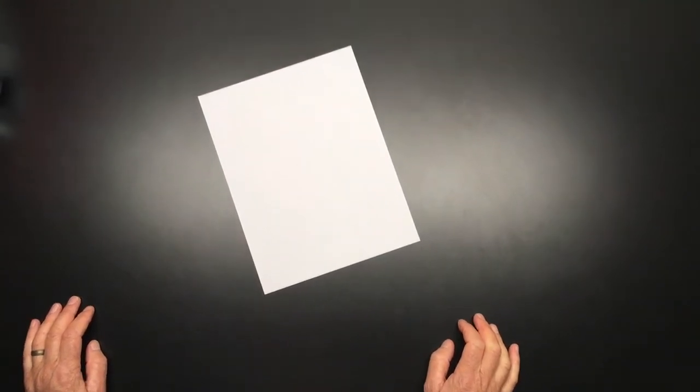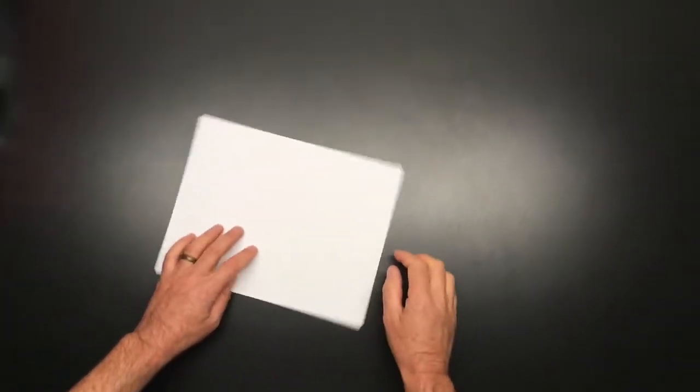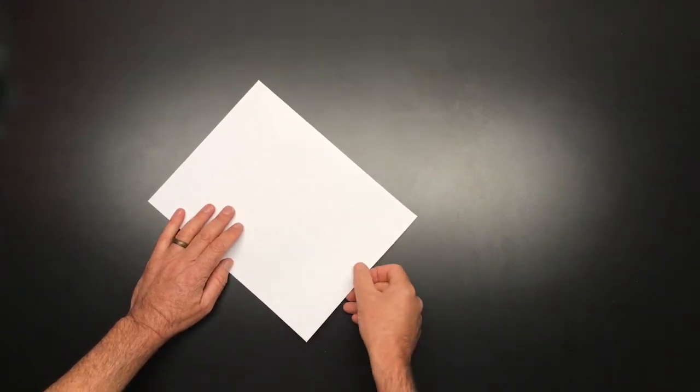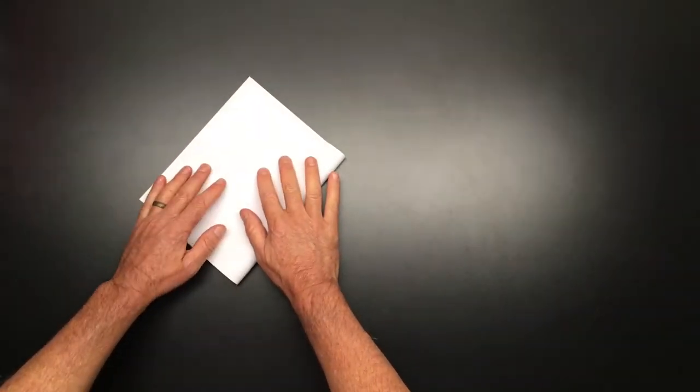This is how to fold a packet for bryophytes or lichens. The first step is to fold the bottom edge up so less than one-third of the top is showing.